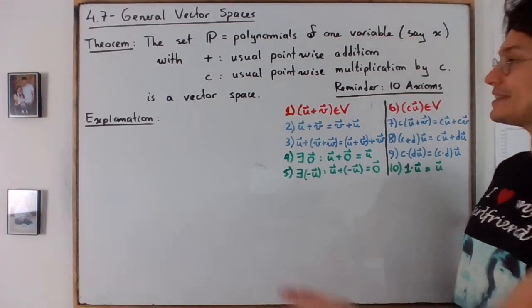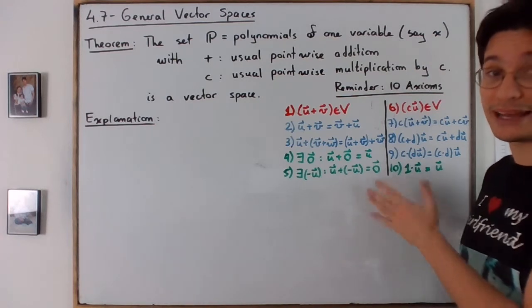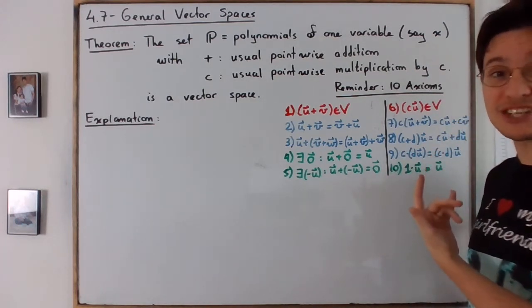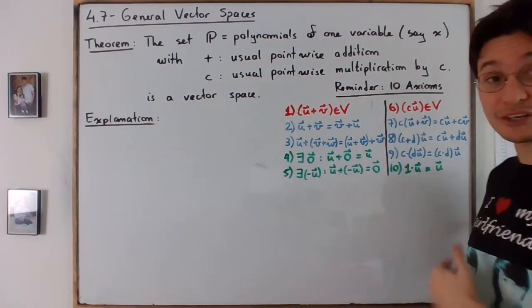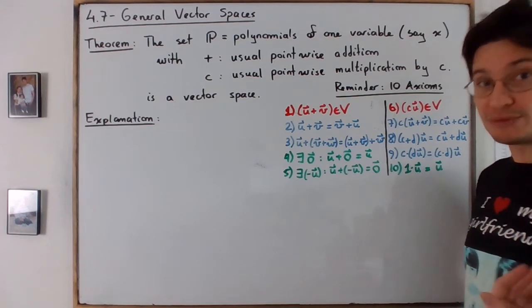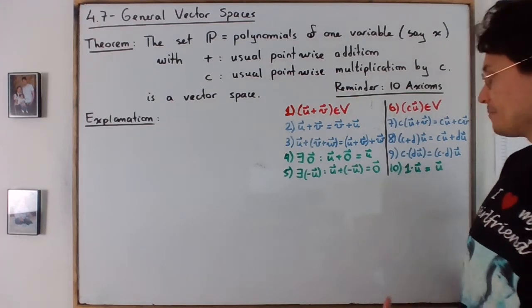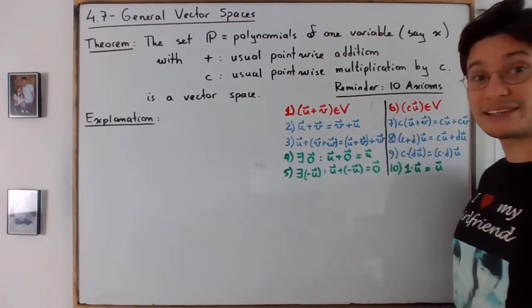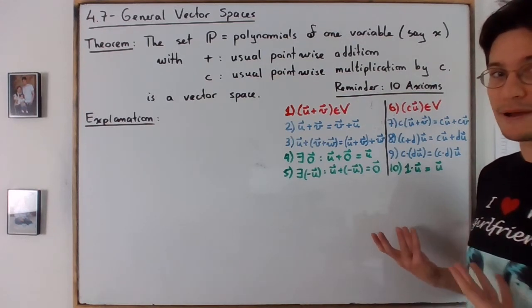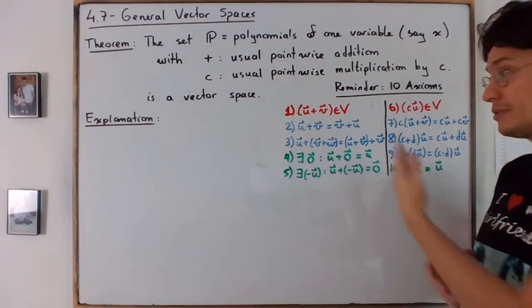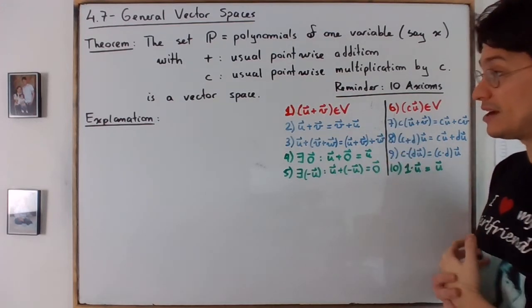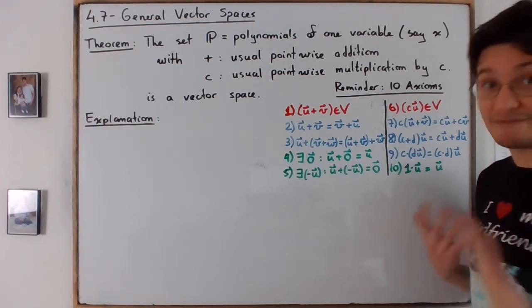And for that, I need to remind the 10 axioms that are very summarized here. Color code is intentional. Remember that the red properties are the closure property. They ensure that whenever you perform operations, you still get an element of your set. The blue ones are the algebraic properties, like in a way that they ensure that whenever you perform these operations on the objects, they behave pretty much like vectors would behave.